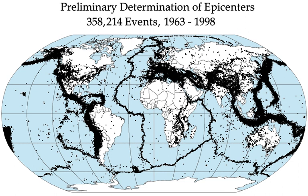The deformation associated with this plate boundary is partitioned into nearly pure thrust sense movements perpendicular to the boundary over a wide zone, and nearly pure strike-slip motion along the main recent fault close to the actual plate boundary itself. This is demonstrated by earthquake focal mechanisms. All tectonic plates have internal stress fields caused by their interactions with neighboring plates and sedimentary loading or unloading, e.g. deglaciation. These stresses may be sufficient to cause failure along existing fault planes, giving rise to shallow intraplate earthquakes.